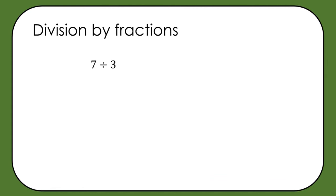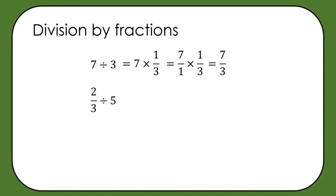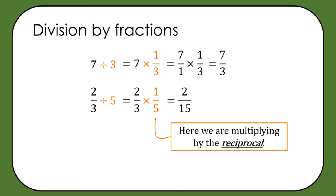For division by fractions, let's first think about what division means. If I'm doing 7 divided by 3, I'm finding one third of 7 — so dividing by 3 is the same as multiplying by one third. Similarly, 2 thirds divided by 5: dividing by 5 is the same as multiplying by one fifth, giving us 2 fifteenths. So dividing by a number is the same as multiplying by its reciprocal.